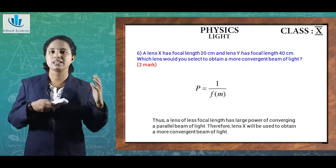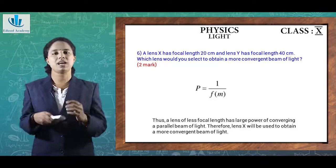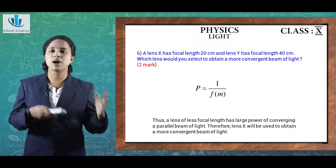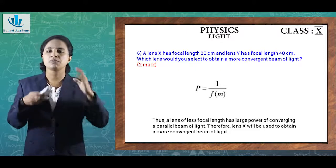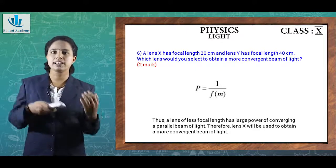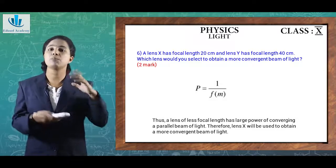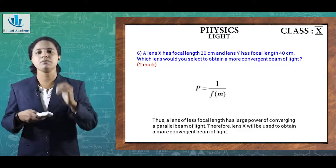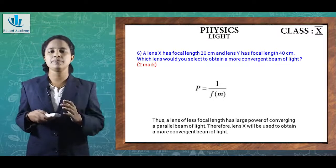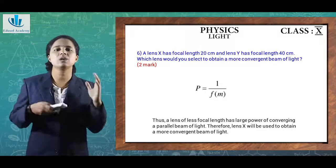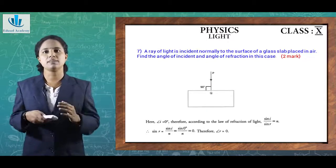Next question: lens X has focal length 20 cm and lens Y has focal length 40 cm. Which lens would you select to obtain a more convergent beam of light? From the equation P = 1/f, when focal length is less, power will be more. Therefore lens X, with a focal length of 20 cm, will produce a more convergent beam of light.